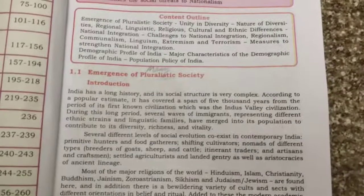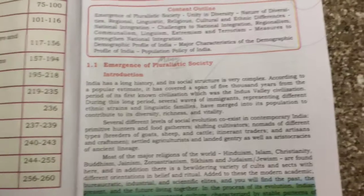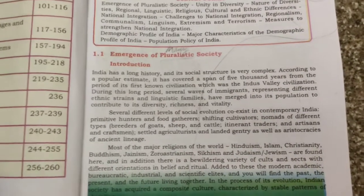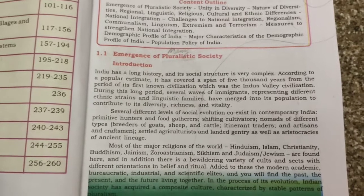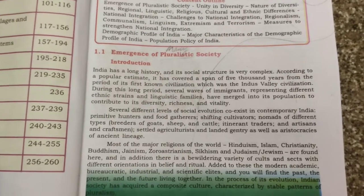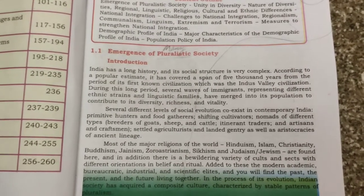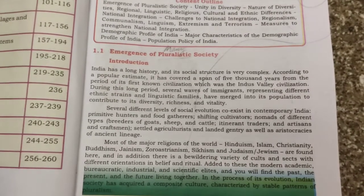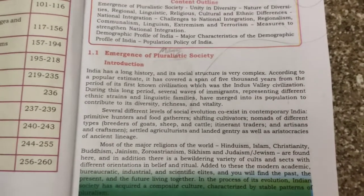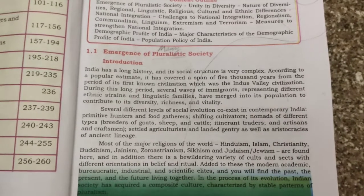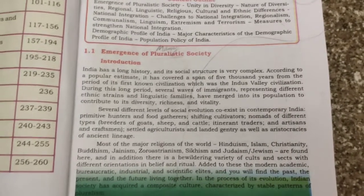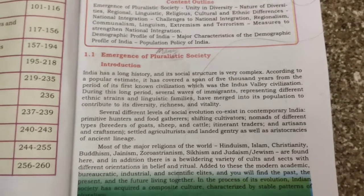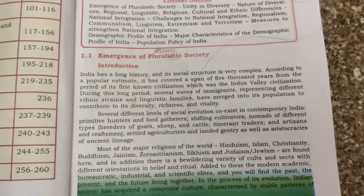The emergence of pluralistic society — pluralistic means many societies. India has a long history and its structure is very complex. According to a popular estimate, it has covered a span of 5000 years from the period of its first known civilization, which is the Indus Valley Civilization. So Indian society dates back to almost 5000 years, and from that time Indian society has been forming with a lot of changes.